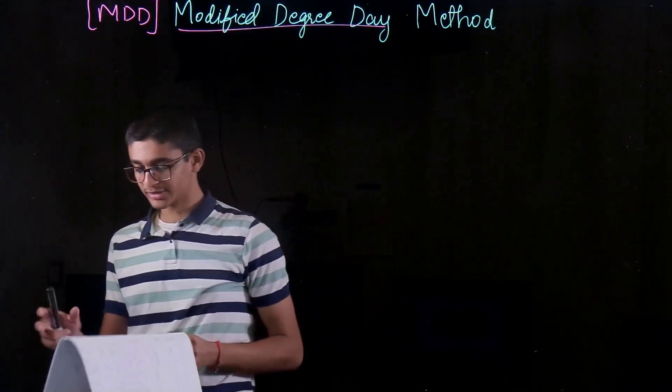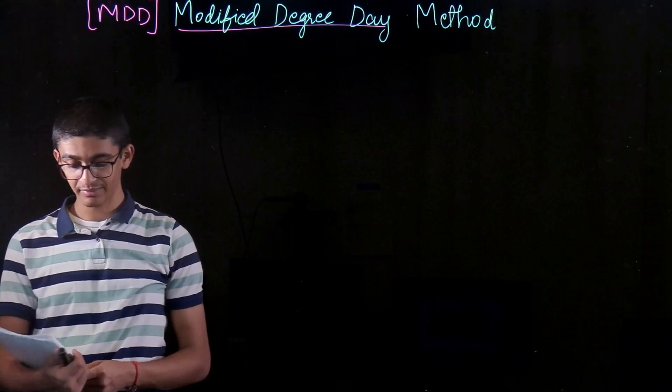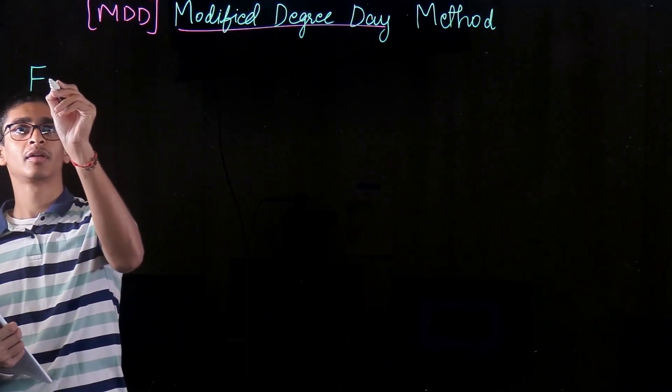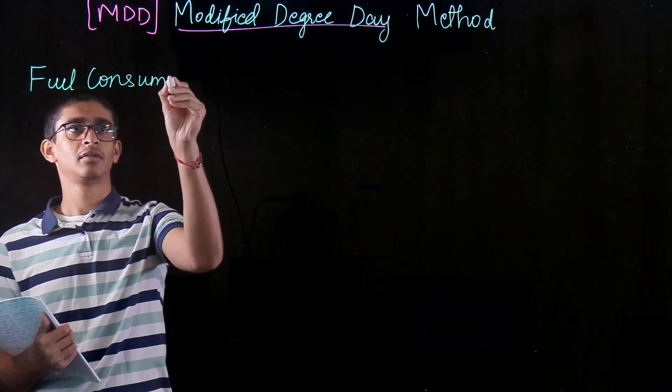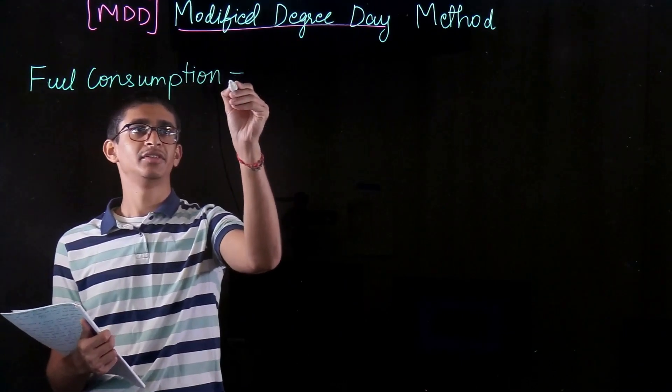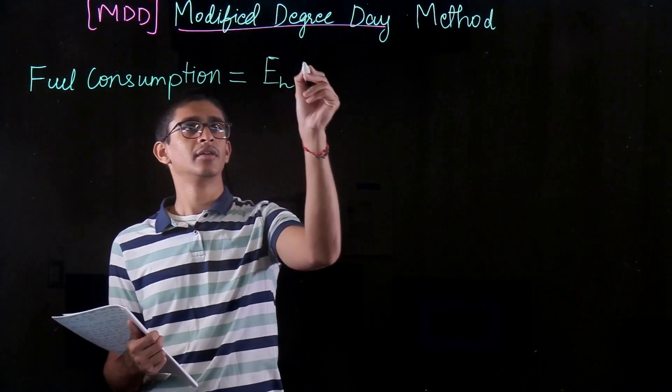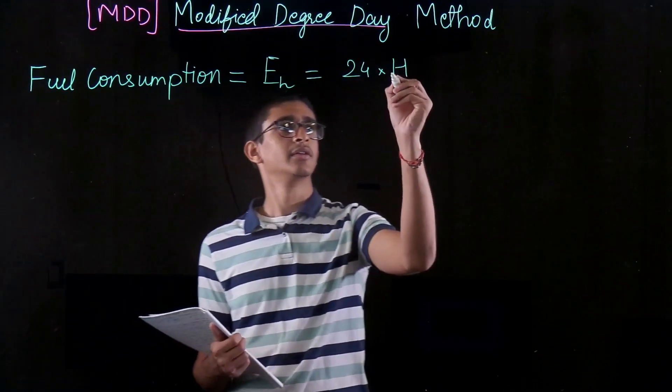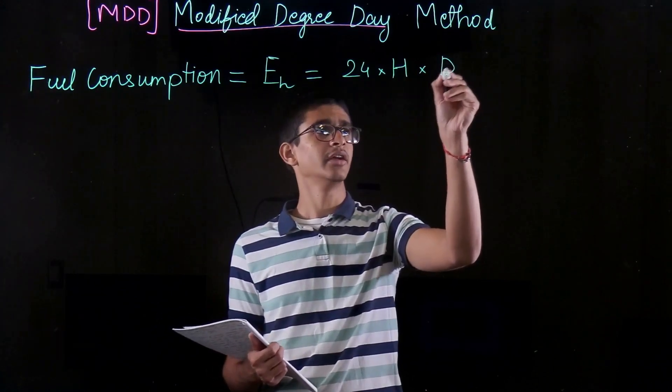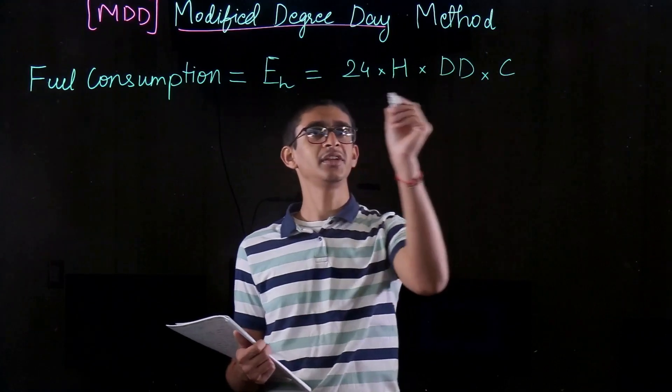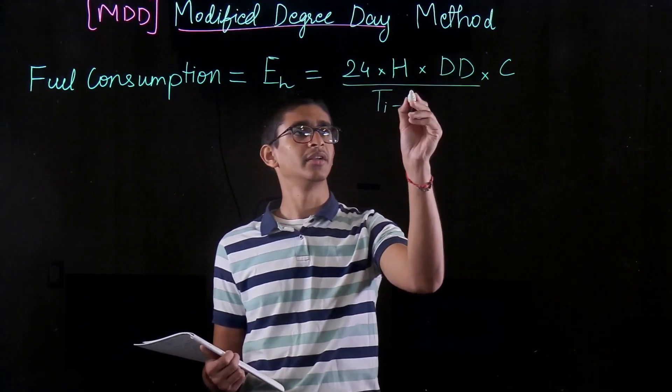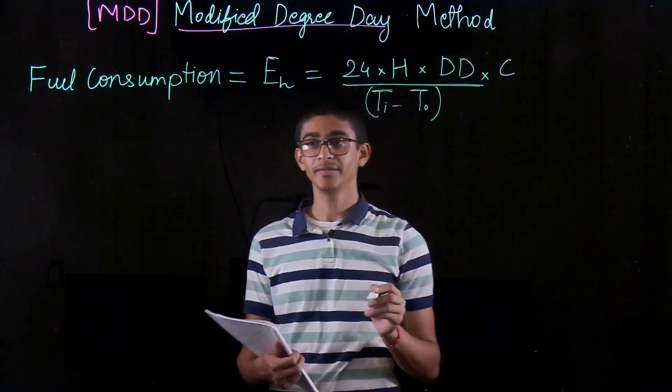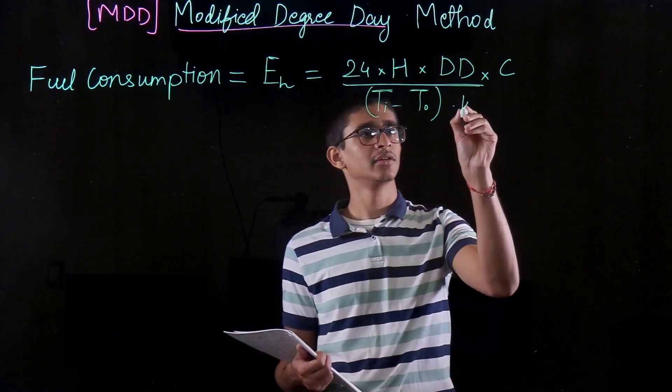The formula for the fuel consumption based on the modified degree day method is very much similar to what we had previously for degree day method. And this gives the fuel consumption which is equal to EH, and it is given by 24 into H times degree day into some factor of C divided by TI minus T out, into K into V.